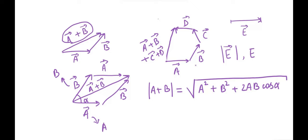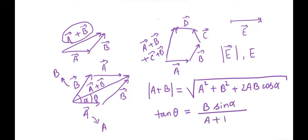The direction of the resultant is denoted by the angle it makes with one of the vectors — let's pick a. If the angle between a and the resultant is θ, then tan θ = b·sin(α) / (a + b·cos(α)).